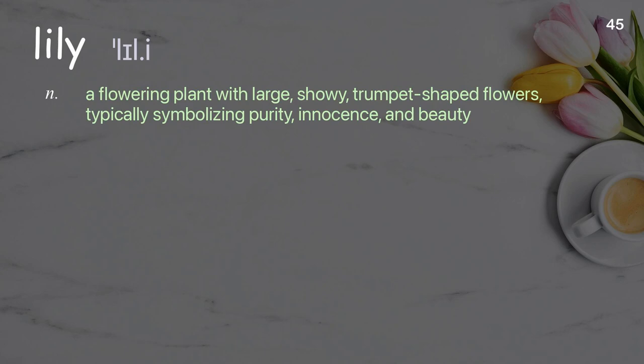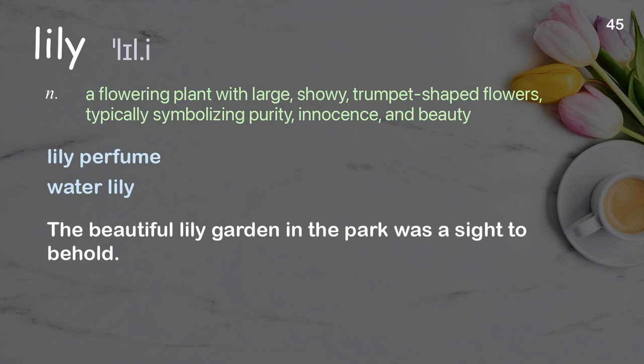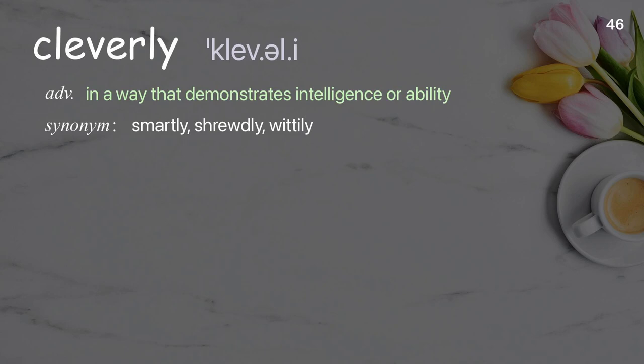Lily: A flowering plant with large, showy, trumpet-shaped flowers, typically symbolizing purity, innocence, and beauty. Examples: lily perfume, water lily. The beautiful lily garden in the park was a sight to behold.